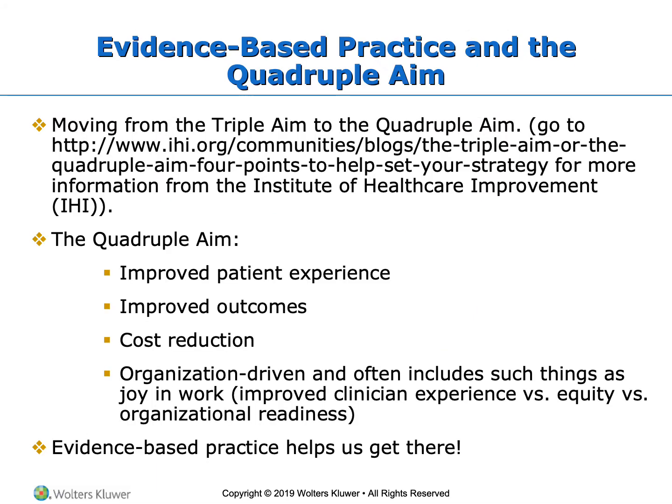The goal of evidence-based practice ties into the quadruple aim — four things we want to address when using EBP. They are improved patient experience, improved outcomes, cost reduction, and organizational drivers, which often include things such as joy in work, clinician expertise, equitability, and organizational readiness. Evidence-based practice helps us get to that quadruple aim.